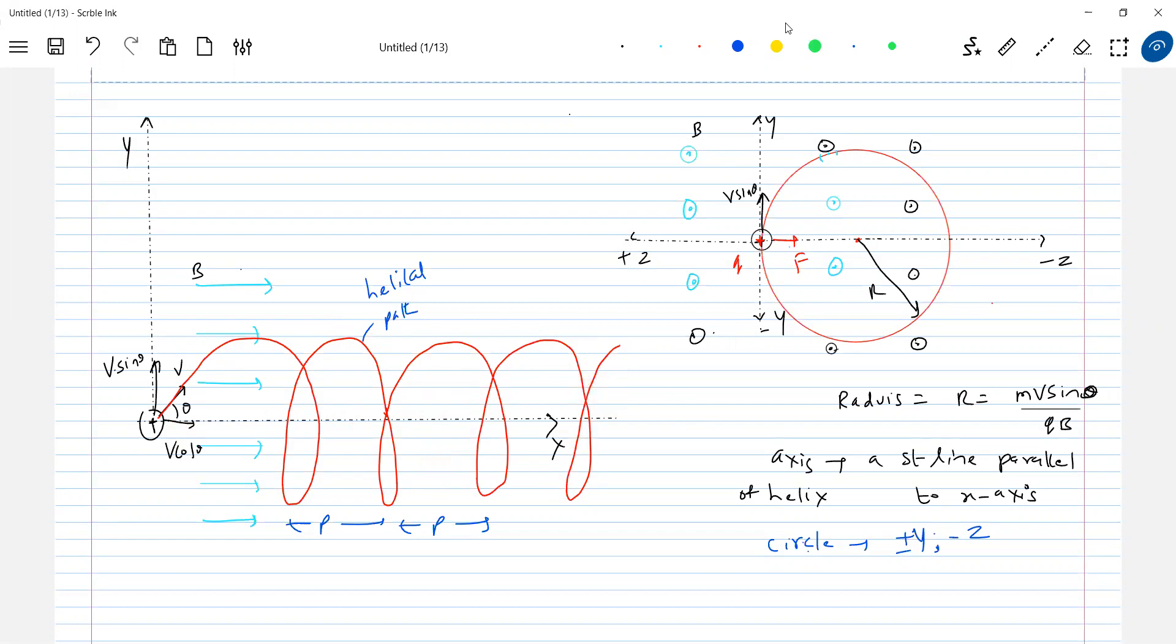So then what is the time period? We know time period is given by 2π m by qB. It is independent of the speed of projection. The time period depends only on these quantities. Then from this, what is the expression for pitch? Pitch P equal to V cos theta into T. So V cos theta times 2π m by qB. The pitch depends upon the speed. So increase the speed of projection, yes, the pitch will also increase. And the pitch will remain constant.